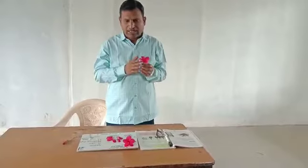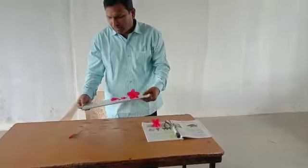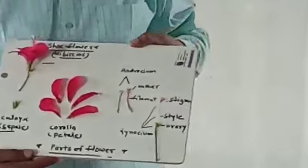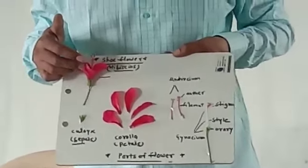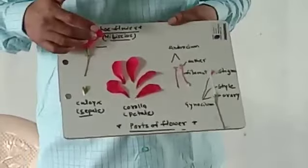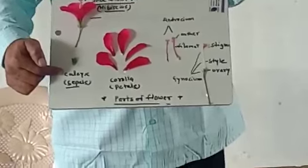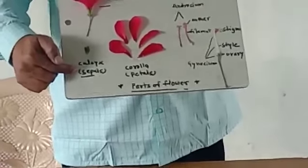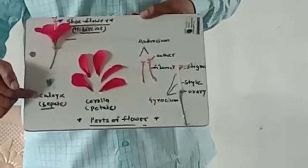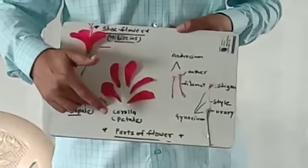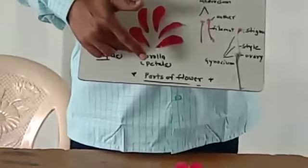Now we are taking a dissection of this flower and making out the various parts in this tray. Here we can see the whole hibiscus flower very easily — it has a total of 4 whorls. The first whorl on the outside is called Calyx. Generally it is green in colour and it has sepals. The function of the Calyx is to protect the inner parts.